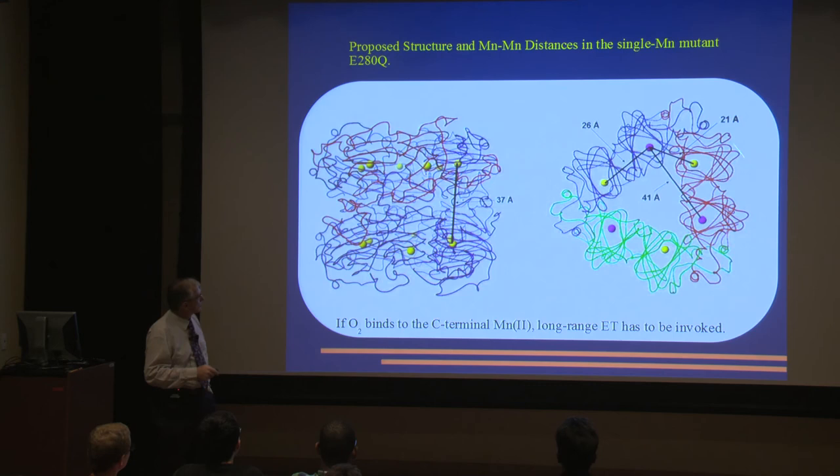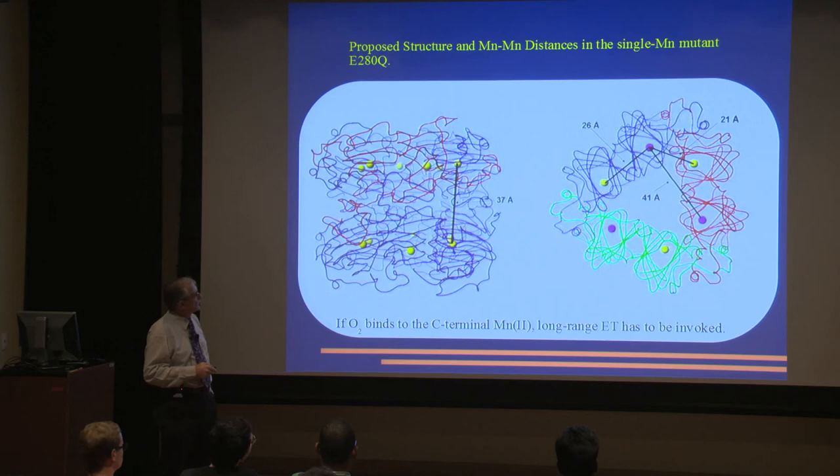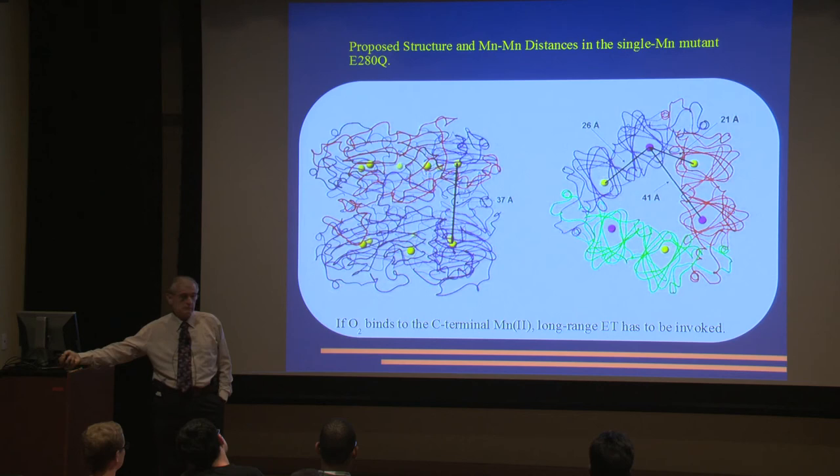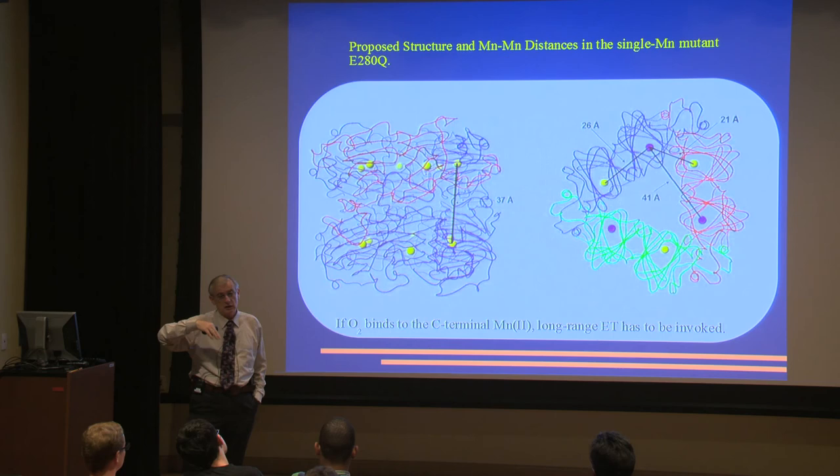Let's take a look at the enzyme structure again. We have our trimer from the crystal structure. This would be our N-terminal manganese. The N-terminal to C-terminal distance is about 26 Å - that's a long distance for electron transfer in a protein. If I assume the enzyme is in a complex, even in solution, I can cut that down to 21 Å. Still a long distance for electron transfer. But if I could put my oxygen on the other manganese, that's the way out because I need it somewhere. If it binds to the other oxygen, I have to invoke long distance electron transfer between them.